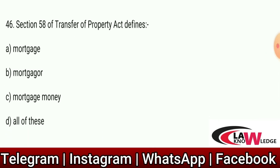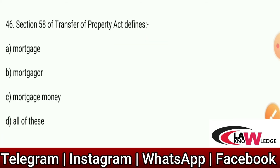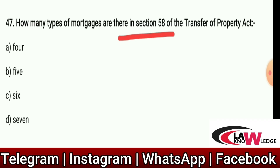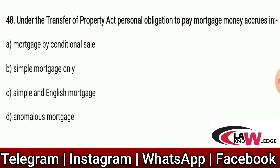Q46: Section 58 of the Transfer of Property Act defines — Option A: Mortgage. Option B: Mortgager. Option C: Mortgage money. Option D: All of these. Correct answer is D. Section 58 defines mortgage, mortgager, and mortgage money — all three. Q47: How many types of mortgages are there in Section 58 of the Transfer of Property Act? Option A: 4. Option B: 5. Option C: 6. Option D: 7. Correct answer is C — there are 6 types of mortgages under Section 58.